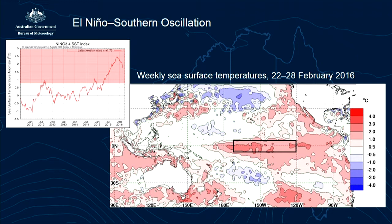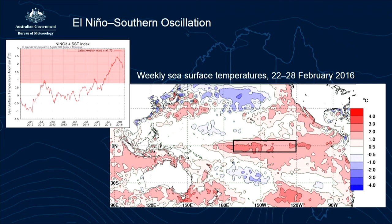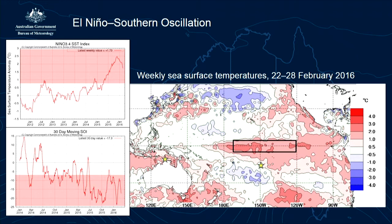Ocean temperatures aren't the only thing we watch. We also look for an atmospheric pattern — the one we look to most often is the Southern Oscillation Index, which is essentially the difference in mean sea level pressure between Darwin and Tahiti. When we get a strong El Niño, you get more low pressure over Tahiti and more high pressure over Darwin. The air over the central Pacific rises into the upper atmosphere, spreads out, and comes down over northern Australia. The SOI has been in El Niño territory for a while, and I'll come back to it later in my talk.